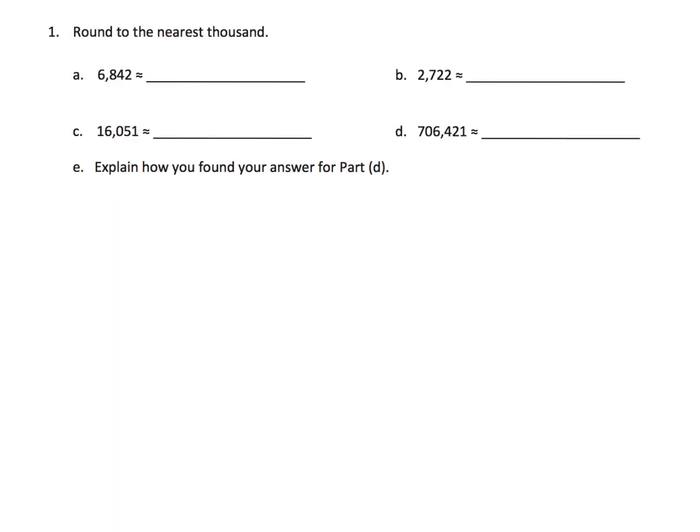Here it says round to the nearest thousand. We're going to be using that standard method, trying to do it without a number line, but I am going to use a shortcut. Let's take a look at this number: 16,051. First, we need to identify what is the thousands place.